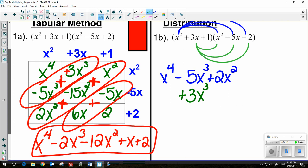And I have a 3x times a negative 5x. So I have a minus 15x squared. And I have a 3x times a 2, which is a positive 6x.